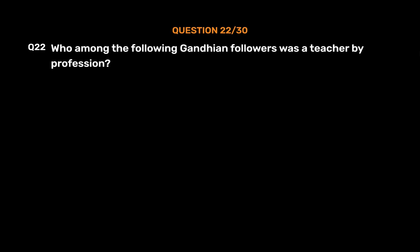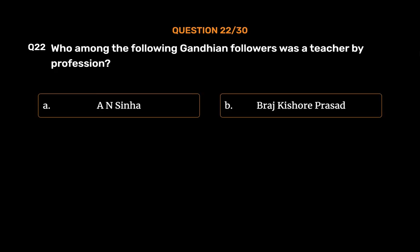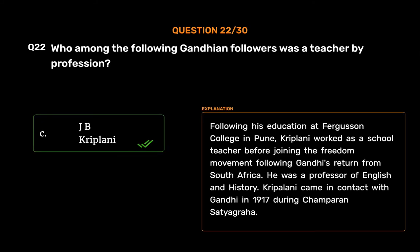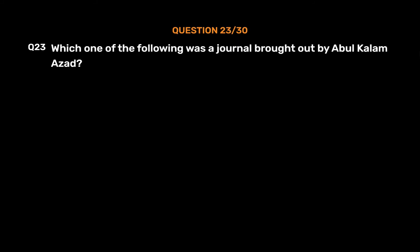Question No. 22. Who among the following Gandhian followers was a teacher by profession? Option A, A.N. Sinha; Option B, Braj Kishore Prasad; Option C, J.B. Kriplani; Option D, Rajendra Prasad. The correct answer is Option C, J.B. Kriplani. Following his education at Ferguson College in Pune, Kriplani worked as a school teacher before joining the freedom movement following Gandhi's return from South Africa. He was a professor of English and history. Kriplani came in contact with Gandhi in 1917 during the Champaran Satyagraha.